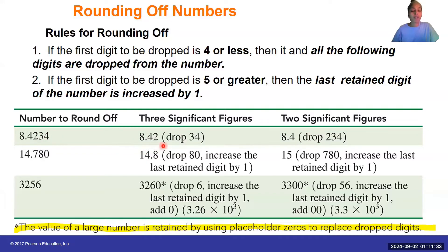What if I wanted to round off 8.4234 to two significant figures? I would drop off these three digits, and because there is a two next to the four, the four remains the same. So I end up with 8.4.